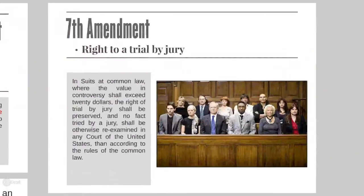The Seventh Amendment is basically a trial by jury in general. It says that if the case exceeds $20, the right to a trial by jury shall be preserved, and no fact tried by the jury shall be otherwise re-examined in any court of the United States. This means that if the jury says you were not convicted of murder, the judge cannot override them — whatever the jury says goes.